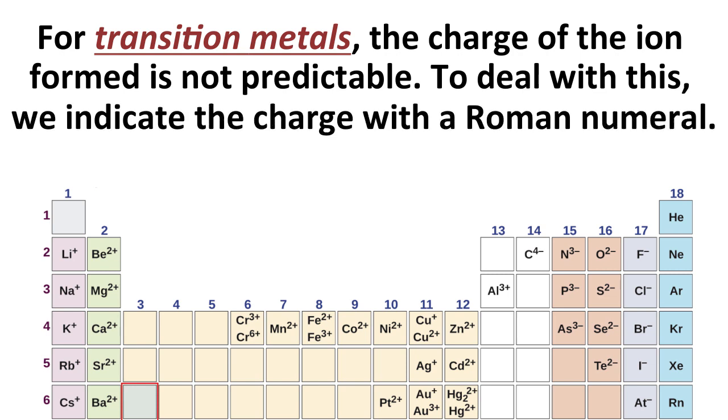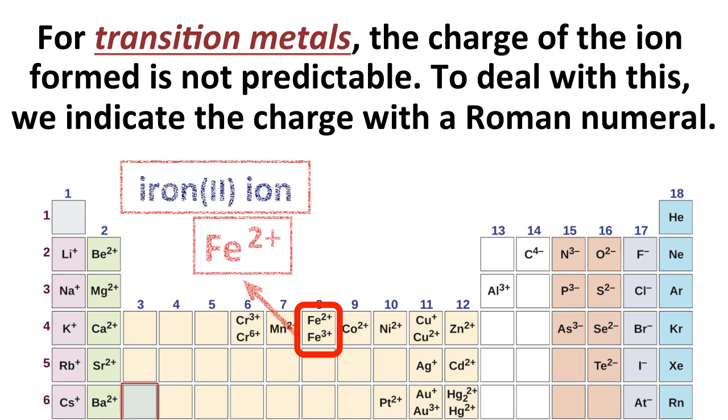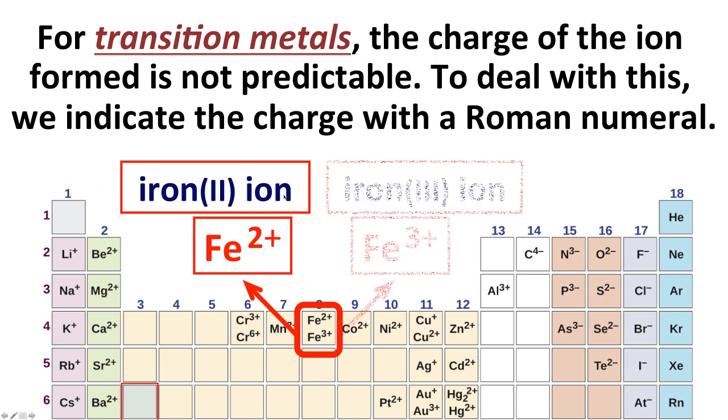One other thing to consider for transition metals, you remember we noted that their charges aren't that predictable and different metals can have different possible charges. Like iron can be plus two or plus three. Chromium can be plus three or plus six and actually plenty of other things as well. So how do we deal with that situation when we can have more than one possibility? To do this, we indicate charge with a Roman numeral if we have a transition metal atom or ion. So iron two plus, we are going to write as iron Roman numeral in parentheses two ion. Iron three plus, we're going to write as iron Roman numeral three ion. We simply have to add the Roman numeral to the metal's name in the name of the compound.